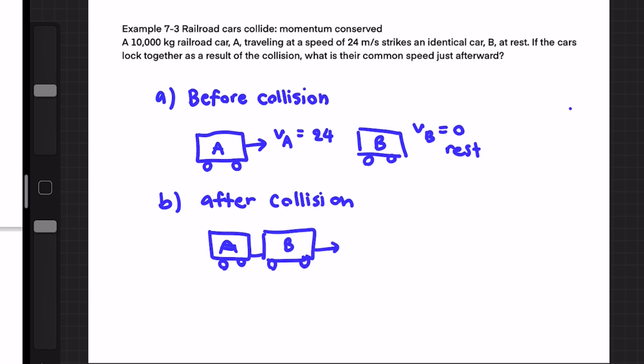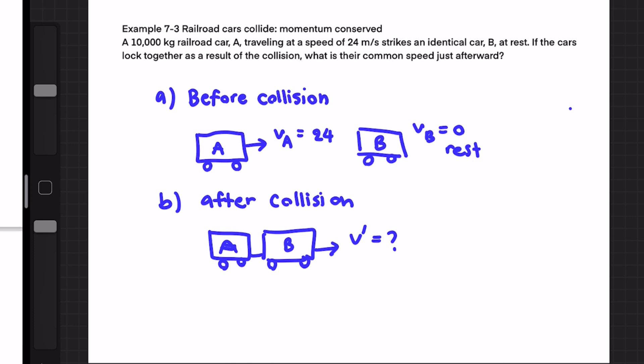So to find the result we need to use the formula. So p initial we're going to state it as p initial equals mA vA plus mB vB equals mA vA because car B is at rest initially. So the direction is to the right in the plus x direction.